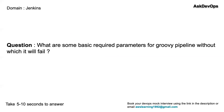Let's go to the next question. It is coming from the domain Jenkins: what are some basic required parameters for a Groovy pipeline without which it will fail? This question was asked by one of my students who had attended a DevOps mock interview session. They are trying to ask you that in the Groovy scripting you write to create pipelines, what are the minimum parameters required without which the pipeline will fail?